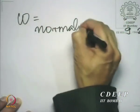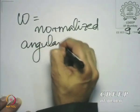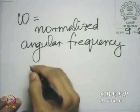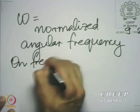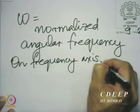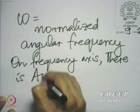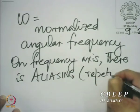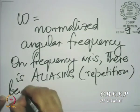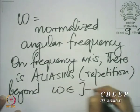Here I am taking a specific input with only three such frequencies. Suppose instead I use a continuum — all the frequencies omega from 0 to 2pi, or all frequencies from minus pi to pi. Now we make a remark about what range of values omega can reasonably take. Omega is the normalized angular frequency, and on the frequency axis there is repetition beyond omega between minus pi and plus pi.